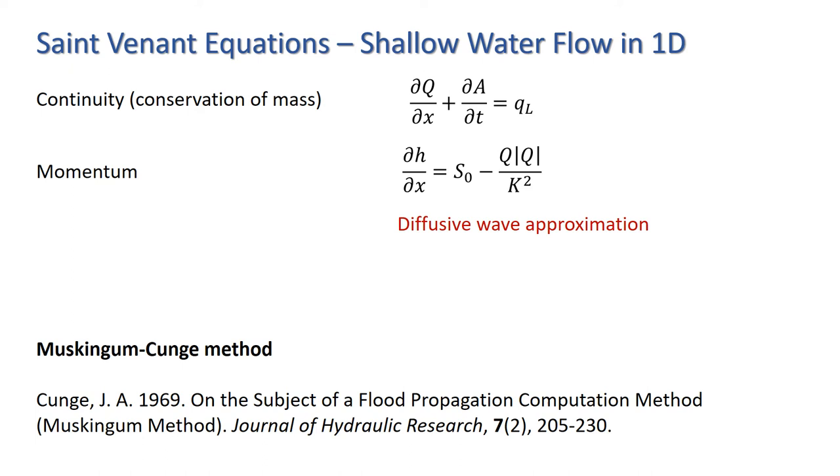In 1969, Jean Cunge did some clever maths that gave him a way of relating the routing parameters k and x in the Muskingum method to the geometric and hydraulic properties of the reach under consideration. I'm not going to go into a full derivation here. You can look that up elsewhere and there's a reference below. But I'm going to focus on the finite difference formulation to give a feel of how this type of scheme is set up and how the numerical method relates to the governing equations.